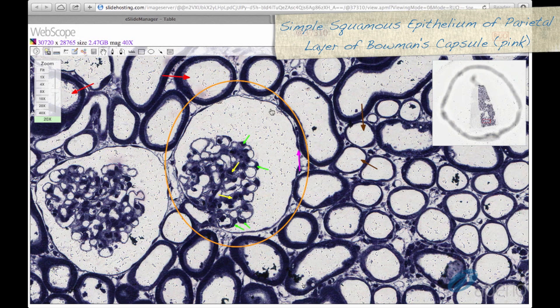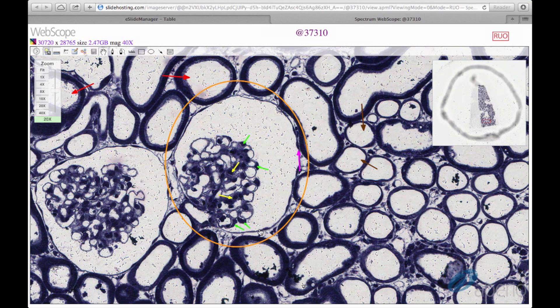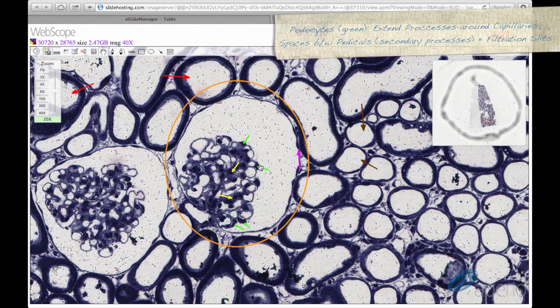Here we can see the simple squamous epithelium of the parietal layer of Bowman's capsule, here at the pink arrow. We can also identify podocytes, here at the green arrows. These extend their processes around the capillaries and develop secondary processes, known as pedicels. The spaces between the pedicels are filtration slits.